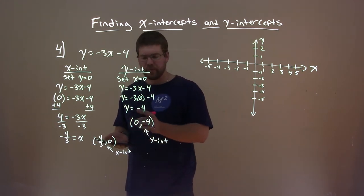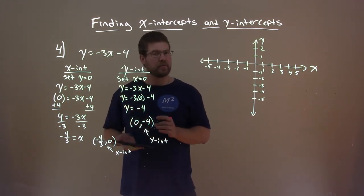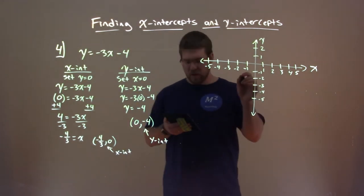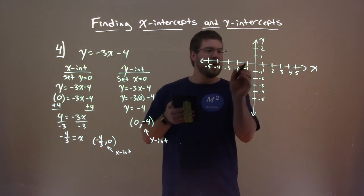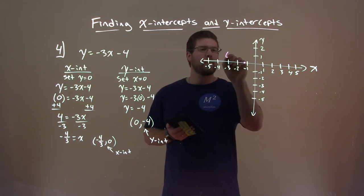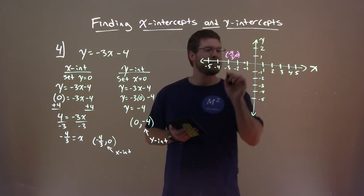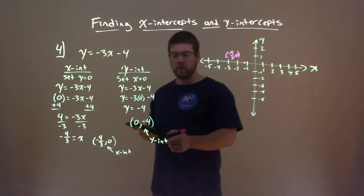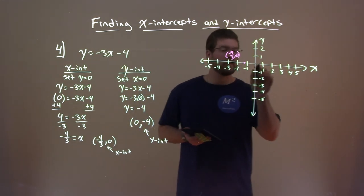So, the first one's a little tricky. Negative 4 thirds is the x value, and the y value is zero. So, negative 4 thirds is somewhere past a negative 1. And it's really negative 1 and 1 third, which is roughly here. So, I'll label that point here, negative 4 thirds comma zero. Now, the other coordinate point, that's the x-intercept.